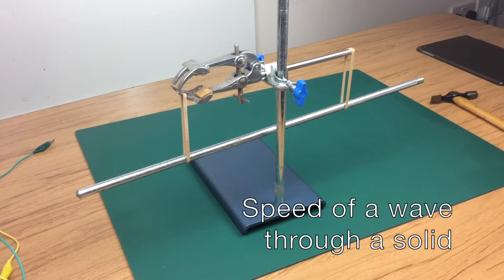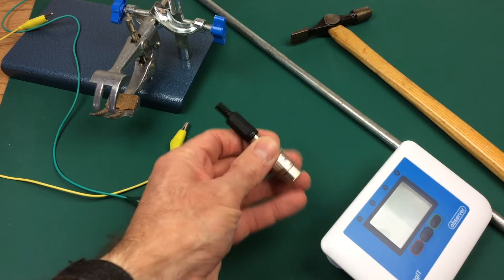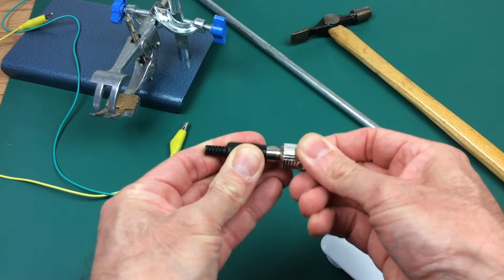This video shows how to record the speed of a wave through a solid bar. To do this you need the designer sensor set, specifically the digital sensor.